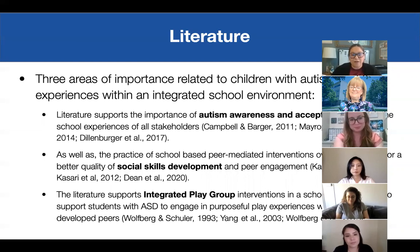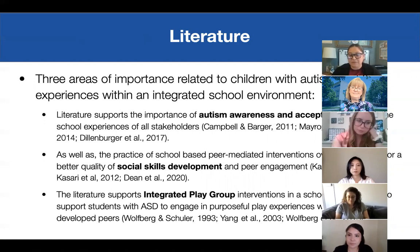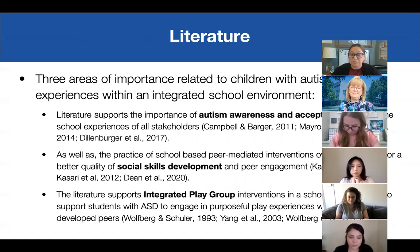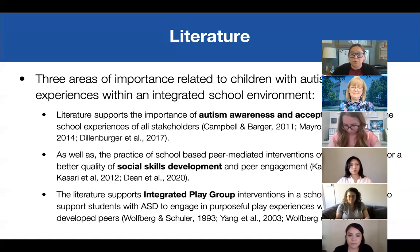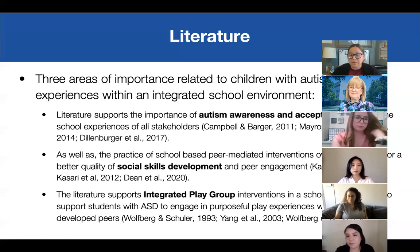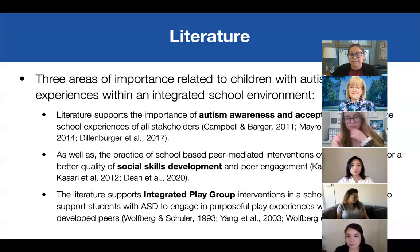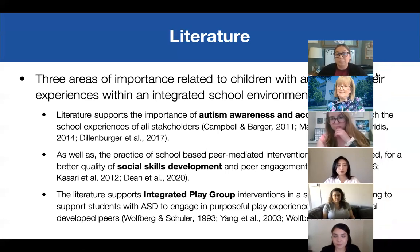From the literature, I identified three specific areas of importance related to children with autism and their experiences within an integrated school environment. The literature supports the idea of autism awareness and acceptance to enrich school experiences of all stakeholders — children with autism, typically developed peers, their teachers, and the community. The literature also supports school-based peer-mediated interventions over clinic-based for better quality social skills development and peer engagement. Additionally, the literature supported integrated play group interventions in school-based settings to support students with ASD in engaging in purposeful play experiences with their typically developed peers.